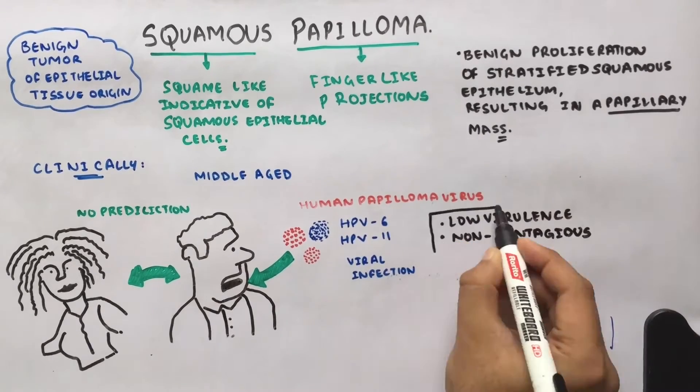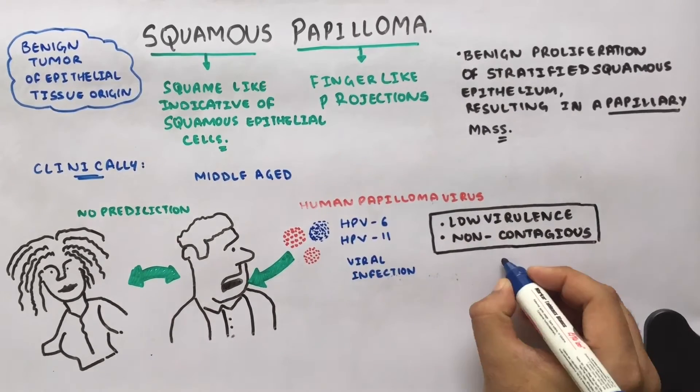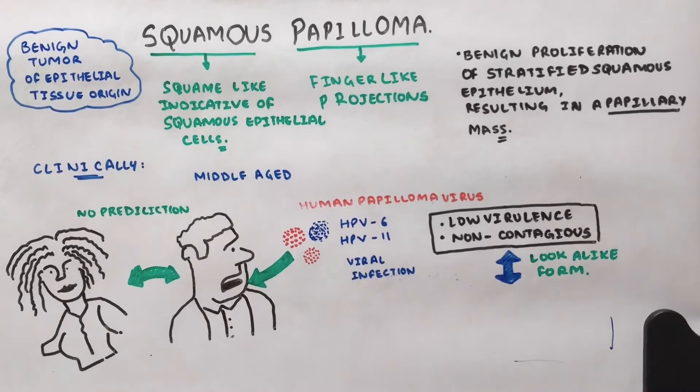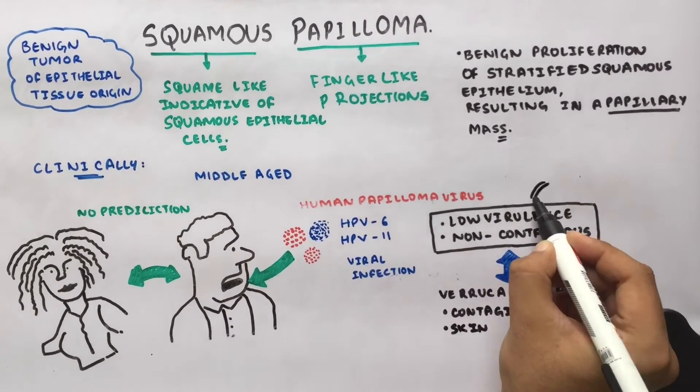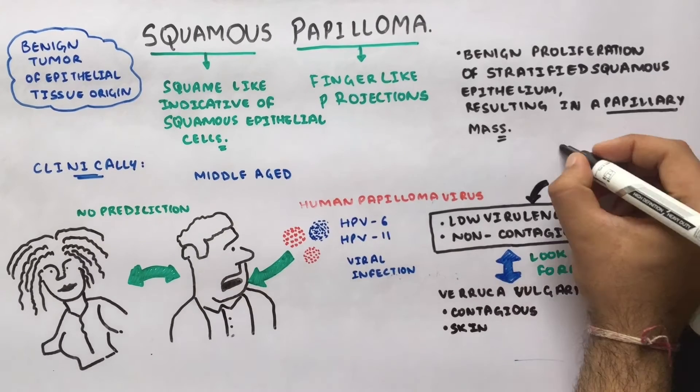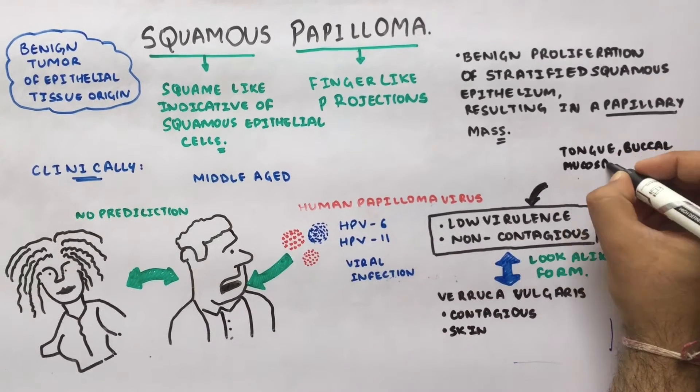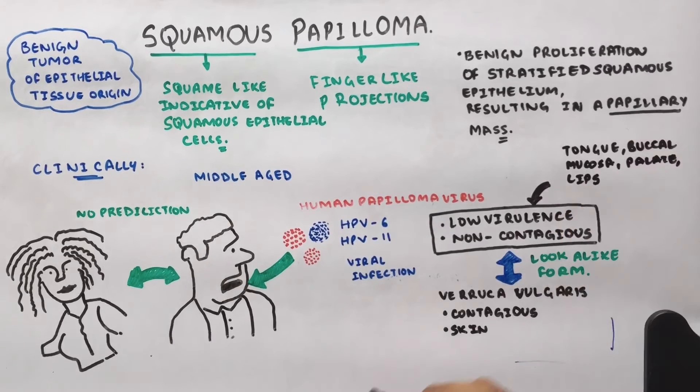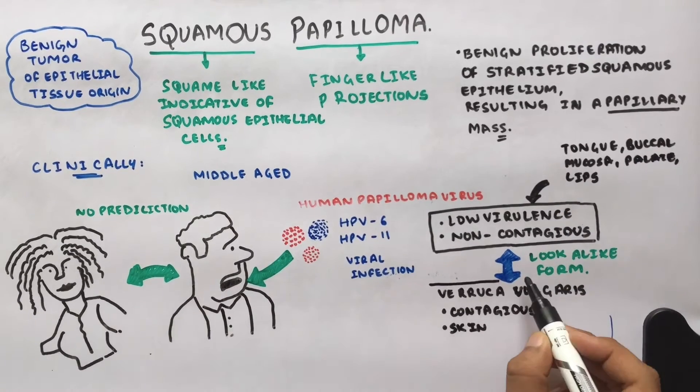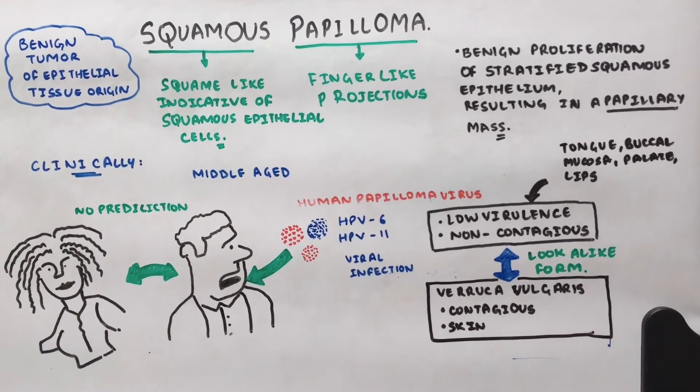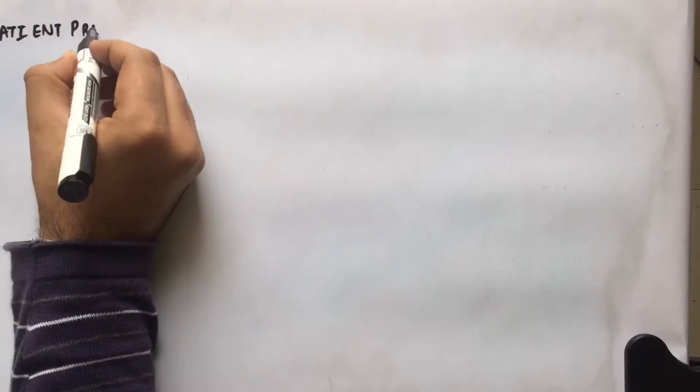Squamous papilloma has a low virulence rate and is non-contagious when compared with its look-alike, verruca vulgaris, which is contagious and frequently occurs on skin. Whereas squamous papilloma occurs in tongue, lips, buccal mucosa, gingiva, and palate. Patient clinically presents with a papilloma.